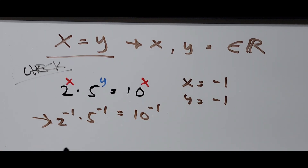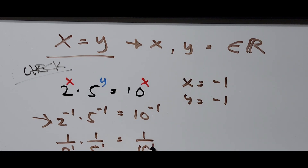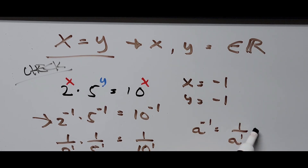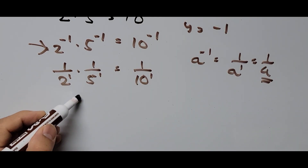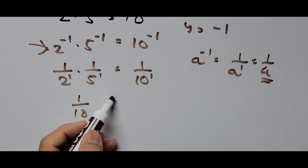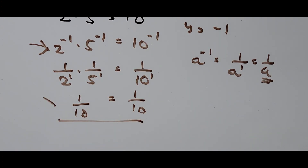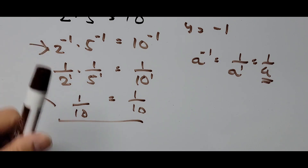Using the exponent rule, a^(−1) equals 1/a, this becomes: (1/2) times (1/5) equals 1/10. Simplifying the left side: 1 over (2 times 5) is 1/10, which equals 1/10. This confirms x equals y with value negative 1.